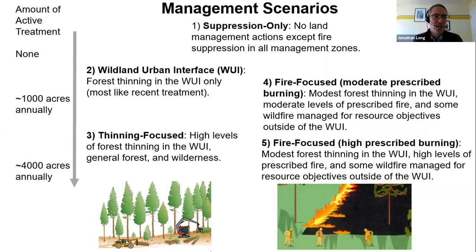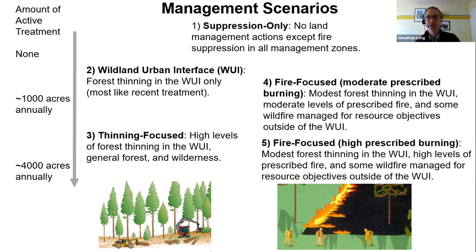This graphic represents the basic management scenarios we modeled, intended to approximate different approaches that managers could choose from. None of them precisely represents the restoration strategy ultimately compiled — that tends to fall in the middle between scenarios two, three, four, and five. The first was a suppression-only strategy. The second was focused on thinning in the WUI, most like business as usual. The third scenario was expanded and more intensive thinning in all zones. Scenarios four and five were fire-focused, distinguished by different levels of prescribed burning, and also included modest amounts of forest thinning in the WUI.